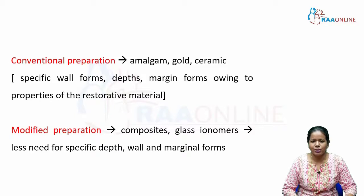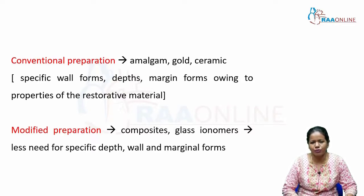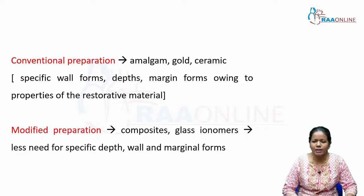There are two types of preparation: conventional preparation and modified preparation. Conventional preparation usually has a specific wall form, depth, and margin forms, and is used for amalgam, gold, and ceramic materials. In modified preparation, you don't need a specific depth, wall, or margins — these are used for adhesive bonded restorations like composites or glass ionomers.